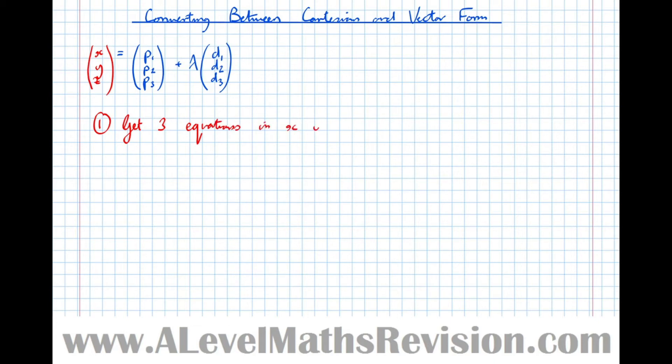So our first equation, the equation in x, we're going to use the top line so we've got x equals p1 plus lambda d1. Our y equation is going to be p2 plus lambda d2, the middle line, and our z equation is going to be the third line, p3 plus lambda d3.